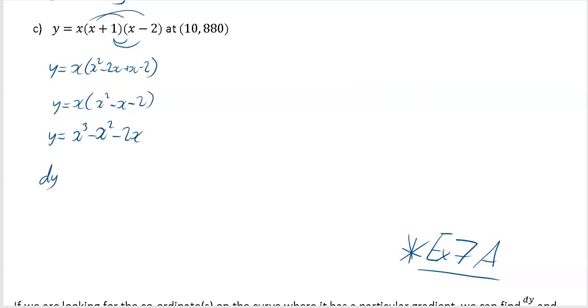And then what we want to do is differentiate that. So if you differentiate that, what you're going to get is 3x squared minus 2x minus 2.